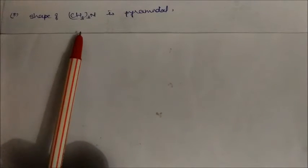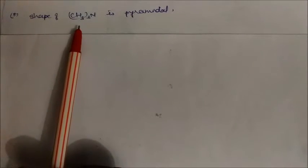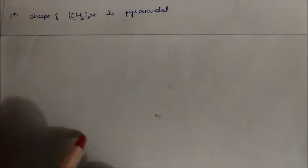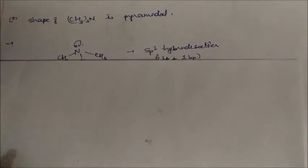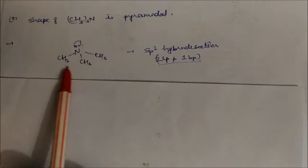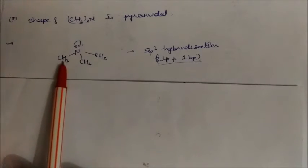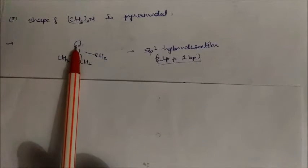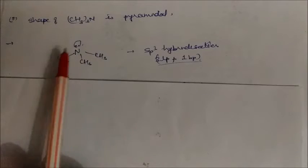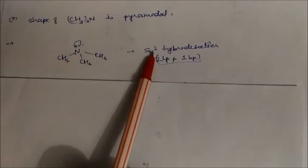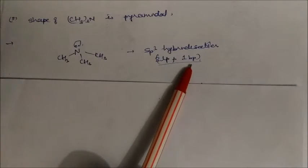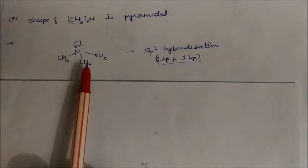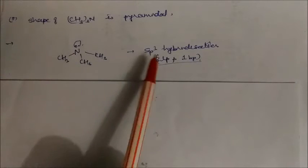The shape of trimethylamine is pyramidal. Trimethylamine has three methyl groups and the nitrogen has one lone pair, giving sp³ hybridization with three bond pairs and one lone pair — that's why it has a pyramidal structure.